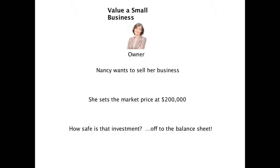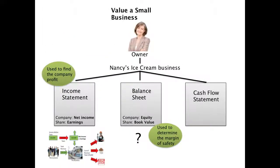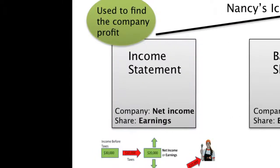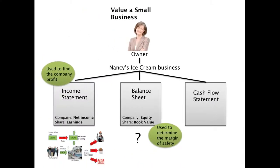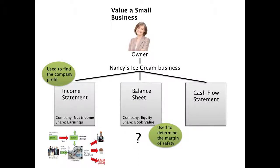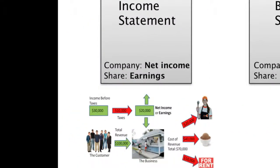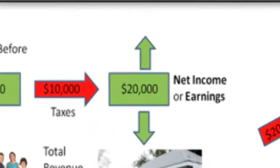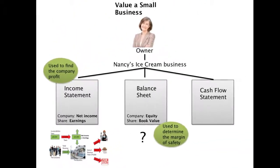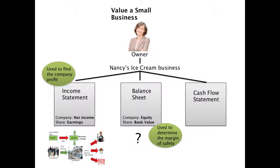Off to the balance sheet is where we're going to figure that out. Any business, any corporation has three pieces of paper they have to account for: the income statement, the balance sheet, and the cash flow statement. For Nancy's business, she has an income statement — we were figuring out what her income statement was in lesson two. It starts at the top with total revenue, and the bottom line is the net income. We pretty much already understand the income statement, which is used to find what the company's profit is going to be.